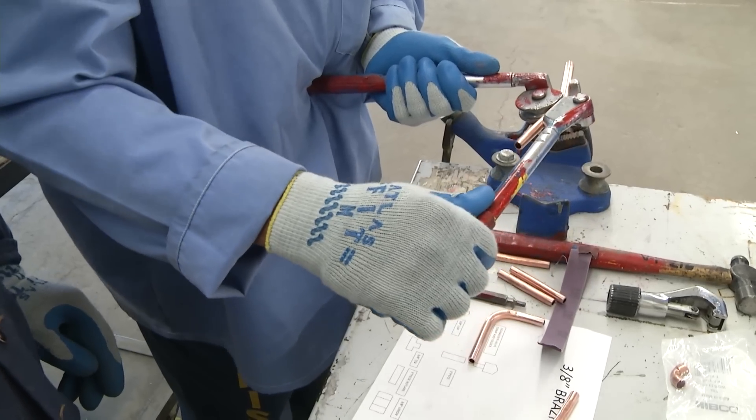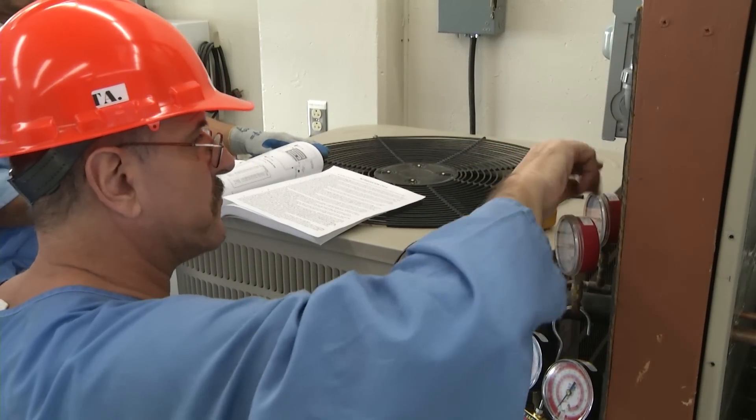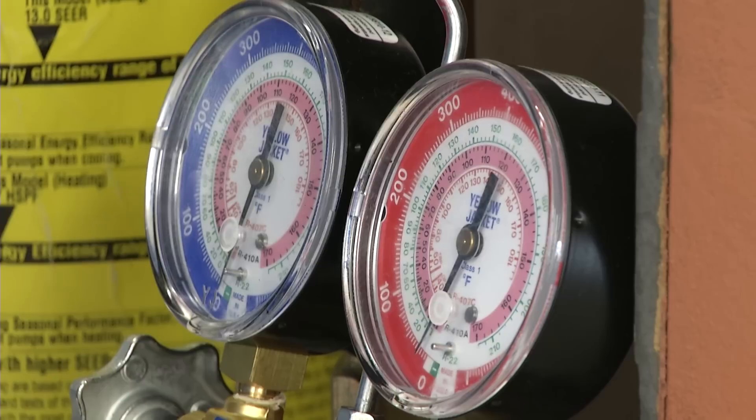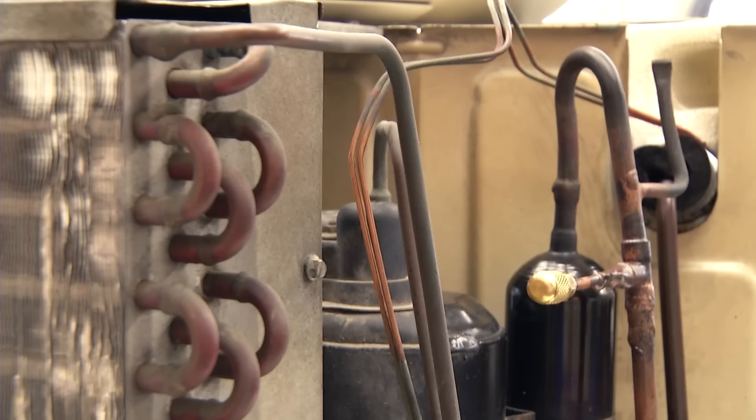I was able to accomplish my EPA 608 license. You need a 608 license in order to work on a unit. I used to work on motorhomes and automotive air conditioning on the outside. The more I know about it, the better off I'll be when I go to look for a job.